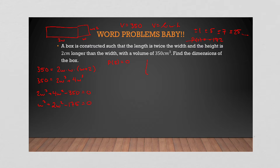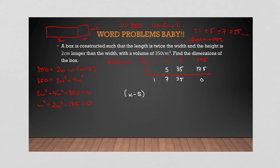So we're going to use 5 to factor this polynomial. We have coefficients 1, 2, 0 (no w term), and −175, with a factor of 5. We do our synthetic division and end up with — as expected — a remainder of 0.